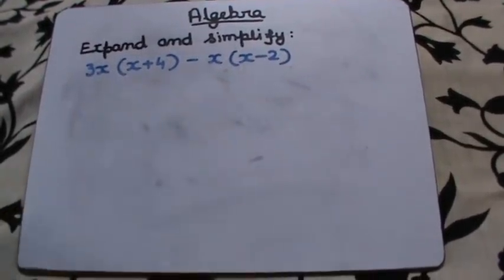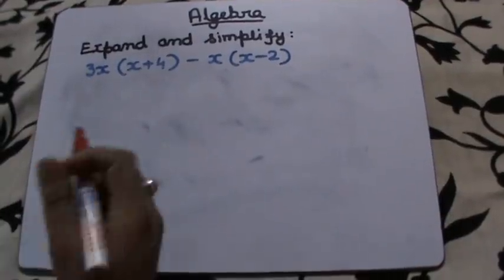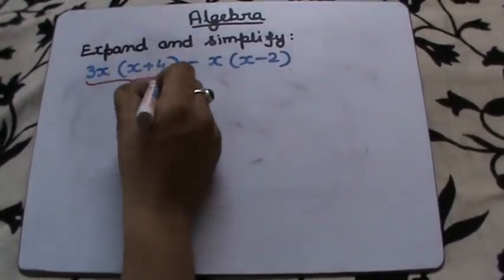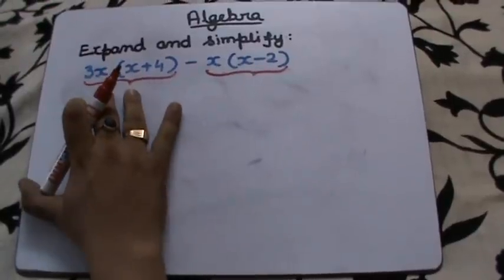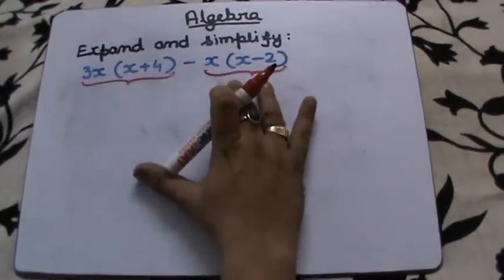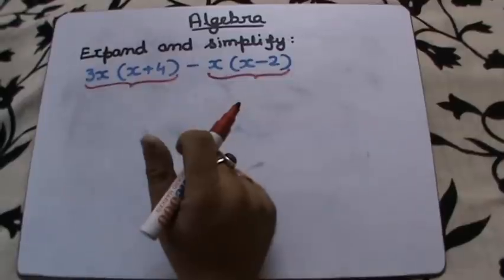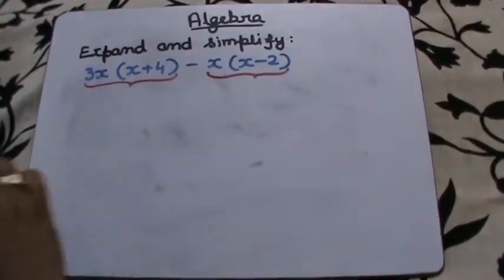Now if we look at the expression, there are two parts in it. There are two terms in it. One is this part and another one is this part. So I must expand this part and this part and then finally combine everything and write down the answer.